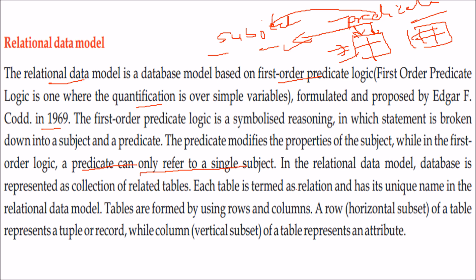In the relational model, each table — called a relation — has a unique name. Tables are organized in the form of rows and columns. A row is the horizontal subset of a table, also called a tuple or a record. Columns are the vertical subset of a table, called properties or attributes.